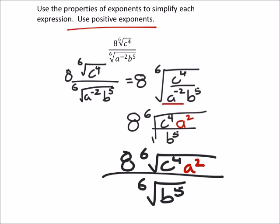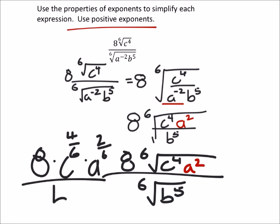Alright, so that's a good point. Let's look at the exponent thing. So I really have 8 times c to the power of 4/6 times a to the power of 2/6 over b to the power of 5/6.